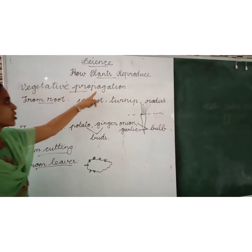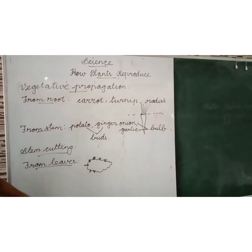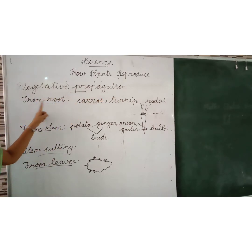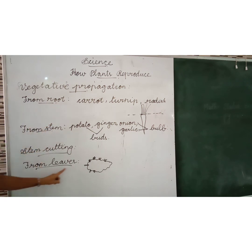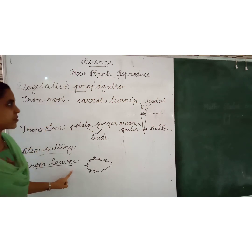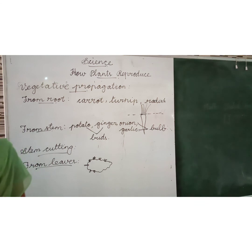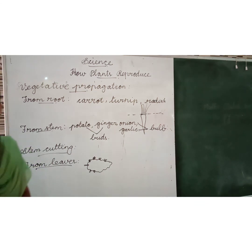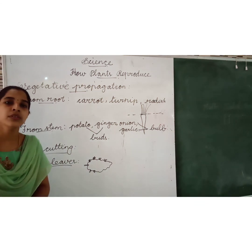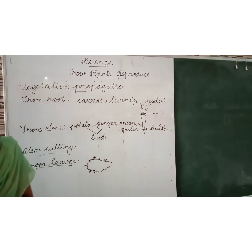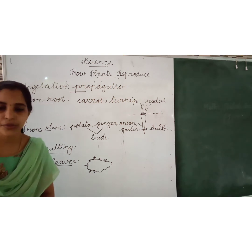What are the types of vegetative propagation? Three types: from root, from stem and from leaves. Did you understand the lesson, children? Today I will send the notes to you. You have to learn the question answers. Thank you.